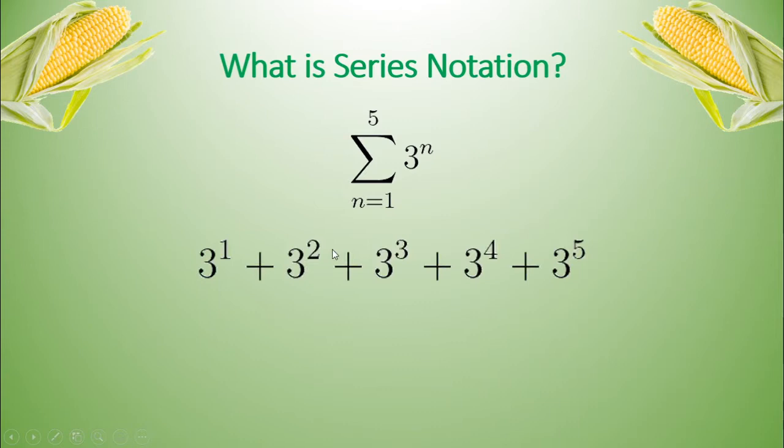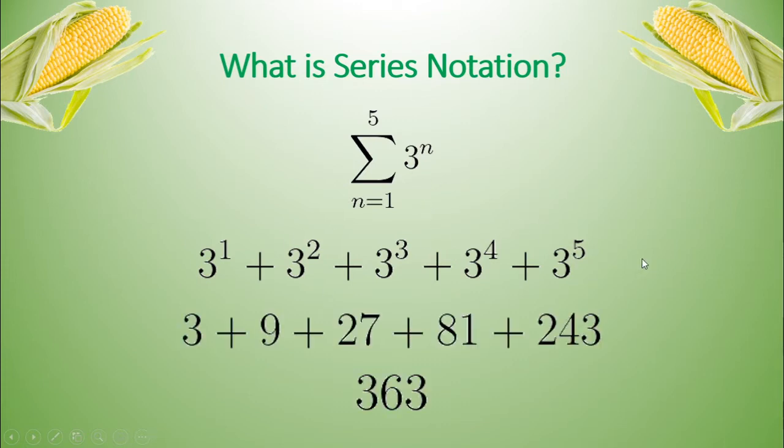So for this series, we plug in n equals 1 to get this term, n equals 2 to get this term, n equals 3 to get this term, n equals 4 to get this term, and n equals 5 to get this term. We add it all up, and so this series evaluates to 363.